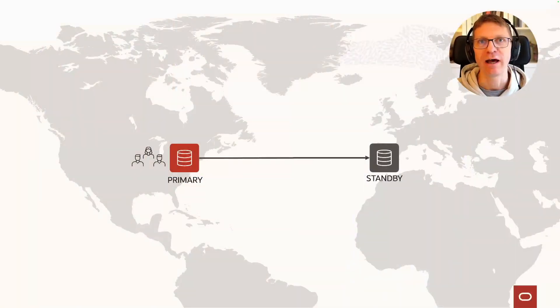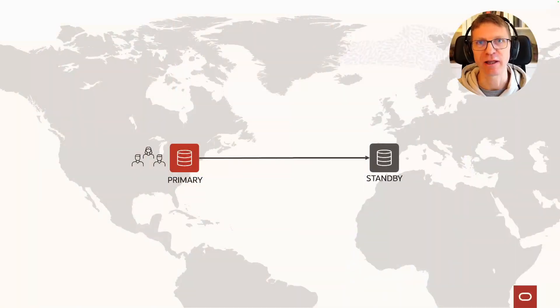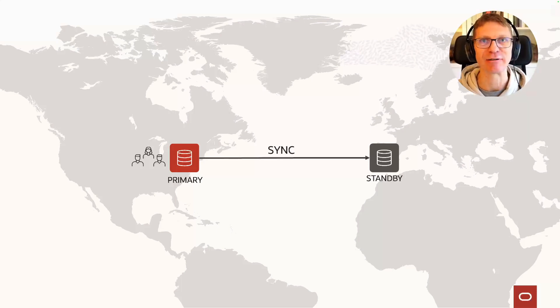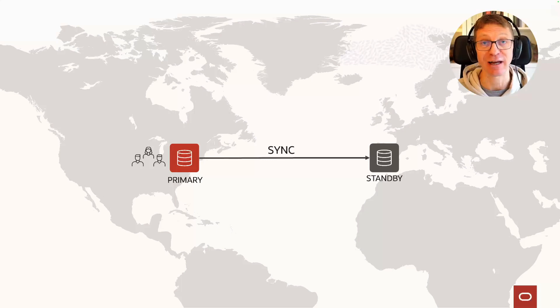One of the features of Oracle Active Data Guard is Farsync. When you have a primary database and you protect it with Data Guard, you have a standby database. If you wanted a zero data loss strategy, you need to have a synchronous transport between the primary and the standby database.